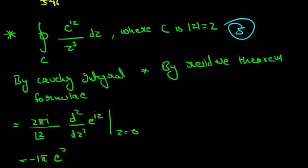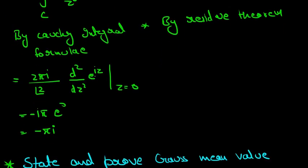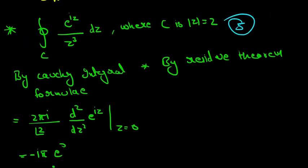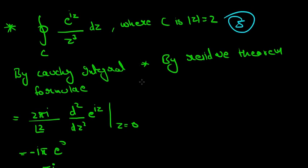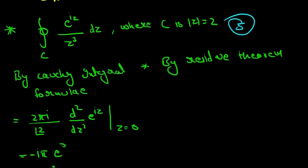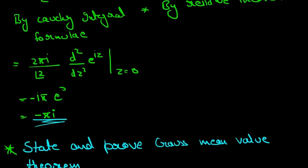By Cauchy integral formula, z equal to 0 is a pole of order 3, so 2 pi i by 2 factorial, d squared by dz squared of e raised to power i z at z equal to 0. Taking the derivative, e raised to i z will give i once, and then again i. i squared is minus 1, so we get a minus, and e raised to power 0 is 1, so the answer is minus pi i. Now I will ask you to solve this by residue theorem yourself, because you are the one who needs practice.